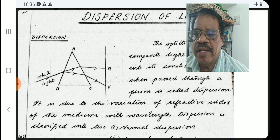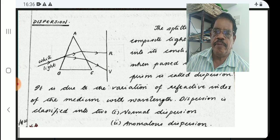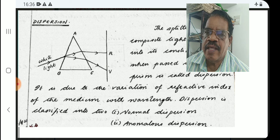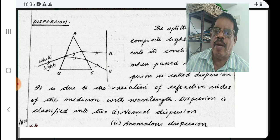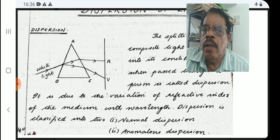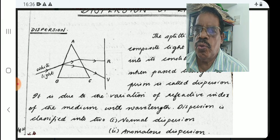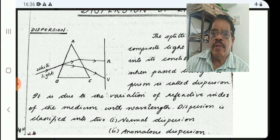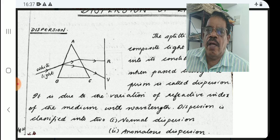Dispersion is classified into two types: namely, normal dispersion and anomalous dispersion. This classification is due to the variation of refractive index of the medium with the wavelength of light.